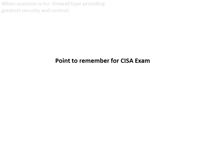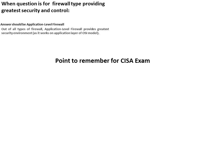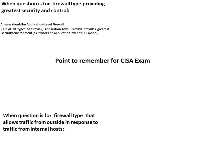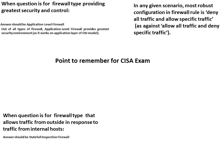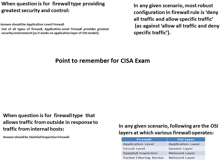Key points to remember for the CISA exam: When the question asks for the firewall type providing greater security and control, the answer is application level firewall, as it works on the application layer of the OSI model. When the question asks for the firewall type that allows traffic from outside in response to traffic from an internal host, the answer is stateful inspection firewall, which inspects communication and allows only traffic in response to internal host requests. In any given scenario, the most robust firewall rule configuration is to deny all traffic and allow only specific traffic. OSI layers: application level — layer 7; circuit level — layer 5 (session); stateful and packet filtering — layer 3 (network).